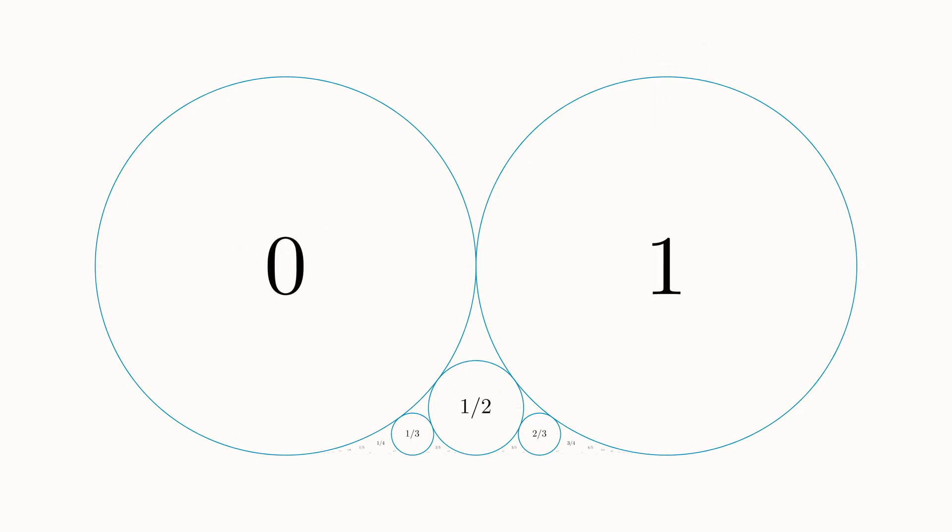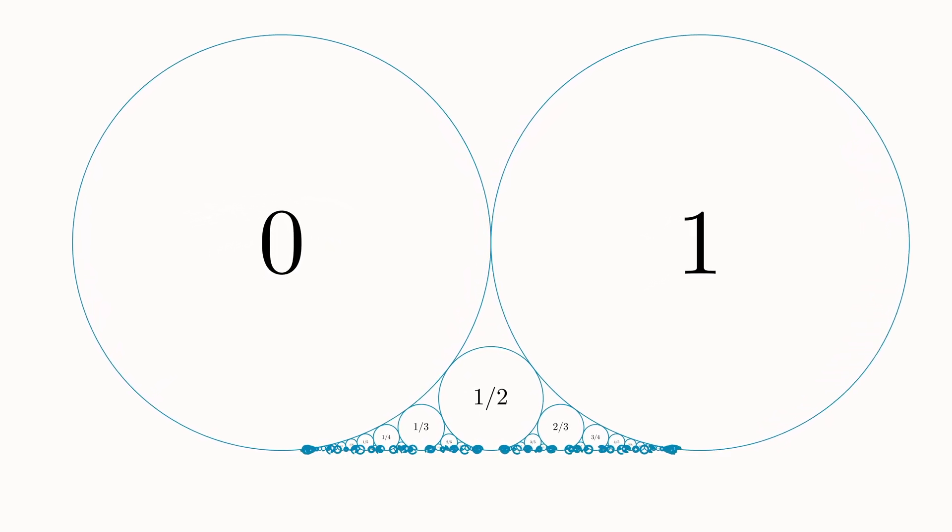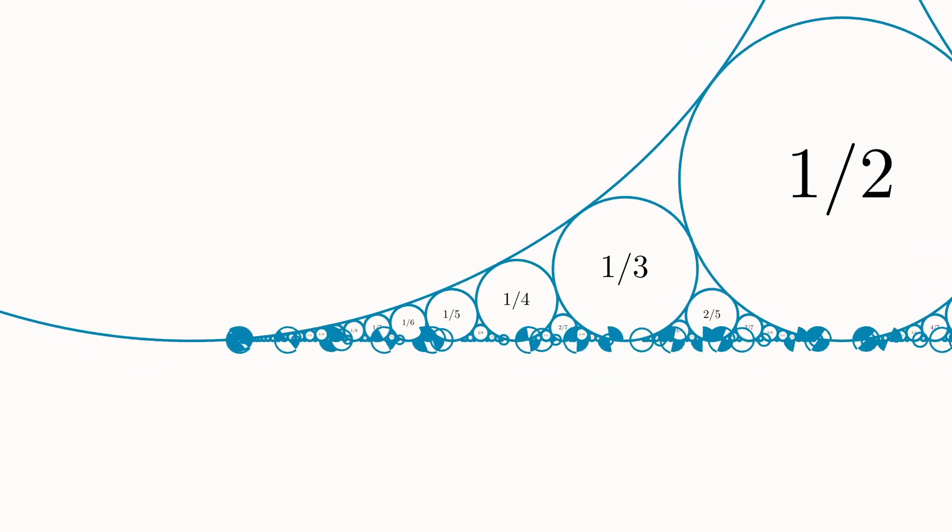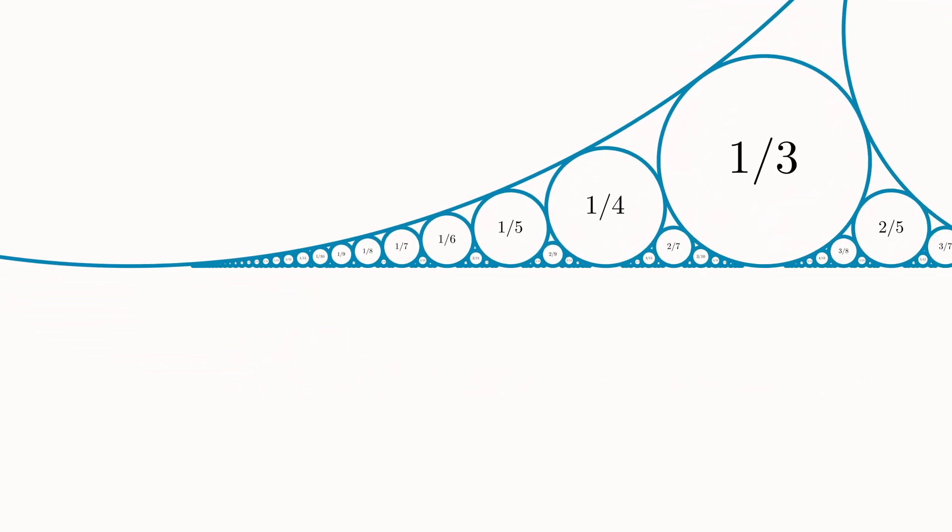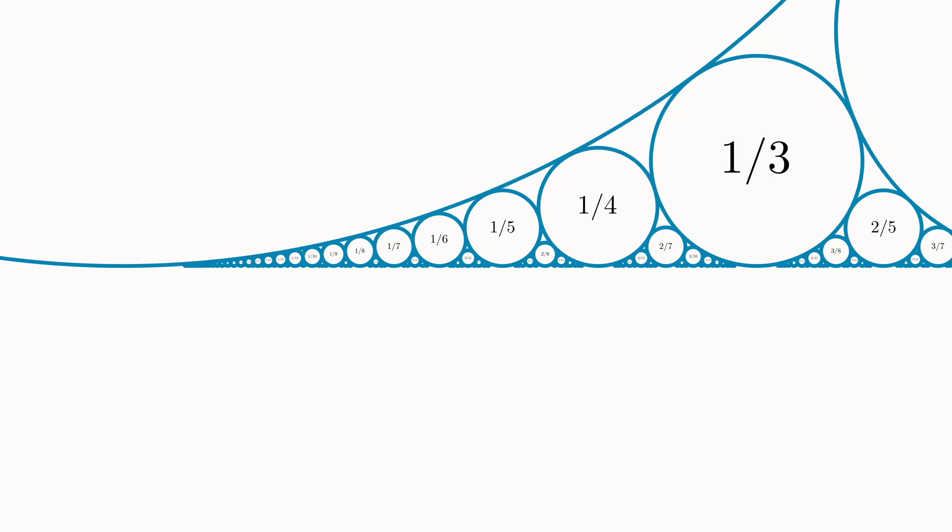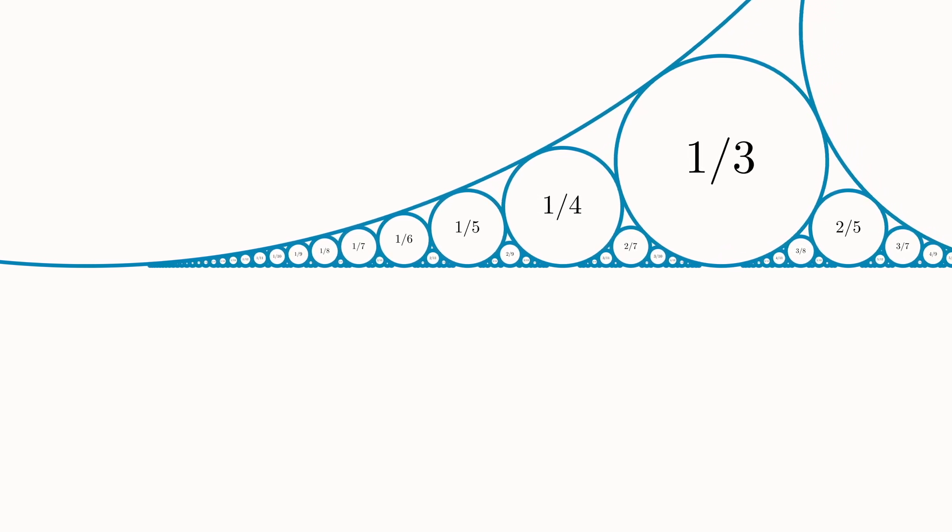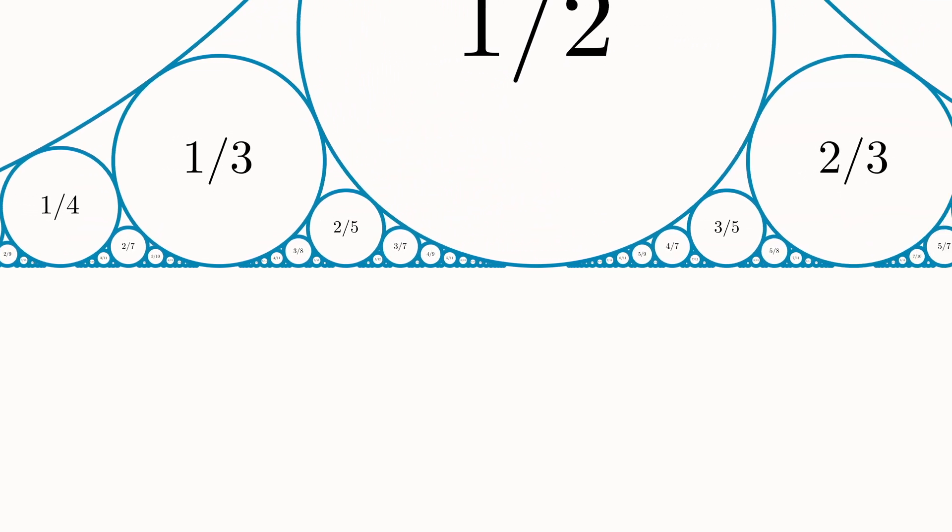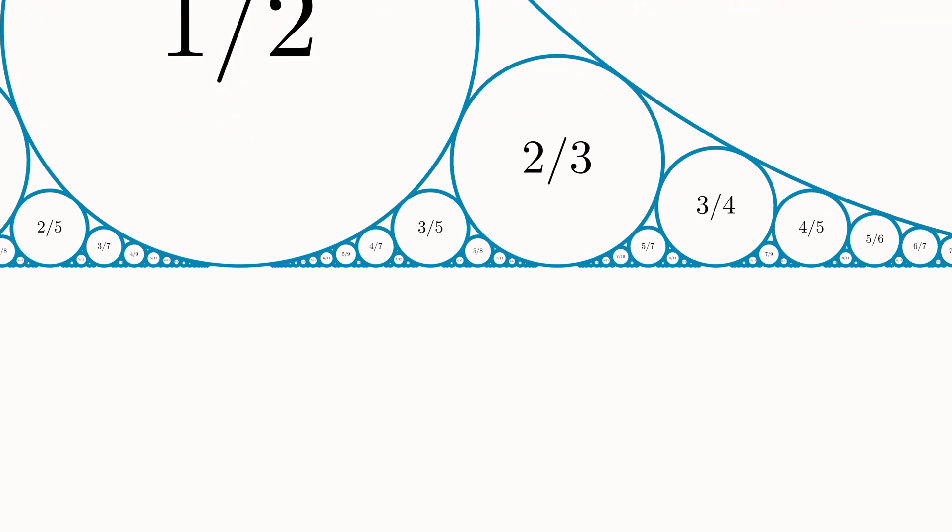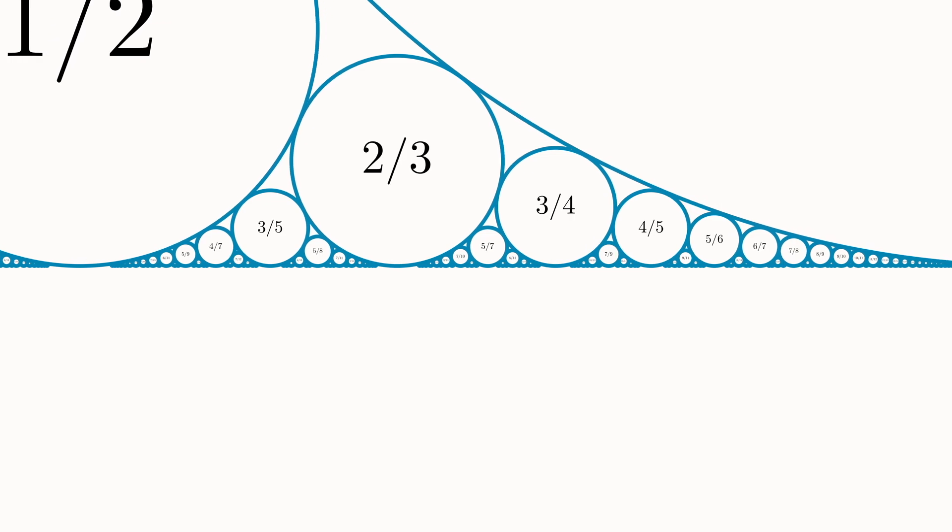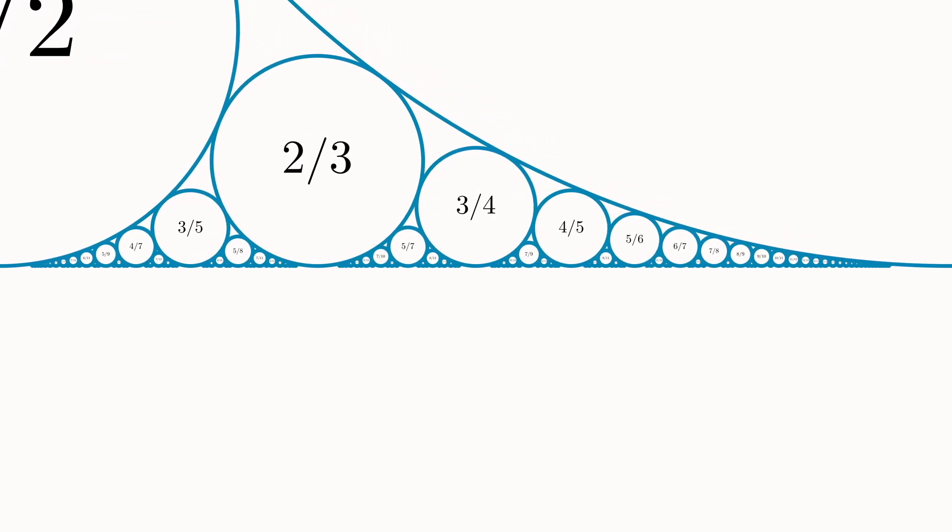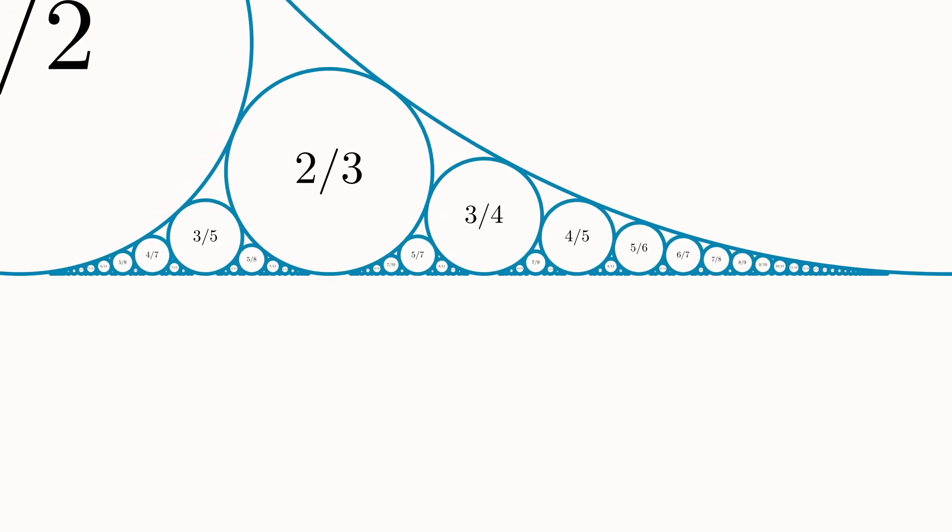And infinitely iterating this process results in a countable number of circles that never intersect each other. All are tangent to two other circles and touch the unit interval at a rational point p over q. Each circle also has a diameter that is related to the denominator of this rational, and it's given by one over q squared. So each of these circles has a rational number p over q that we can associate to it. And since there are a countably infinite number of them, it should come as no surprise that all of the rationals are covered in this process.